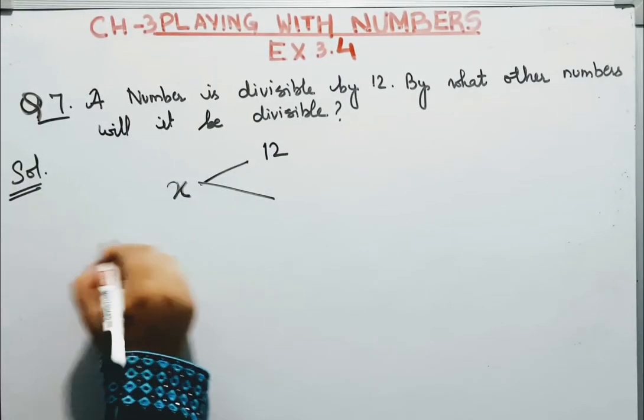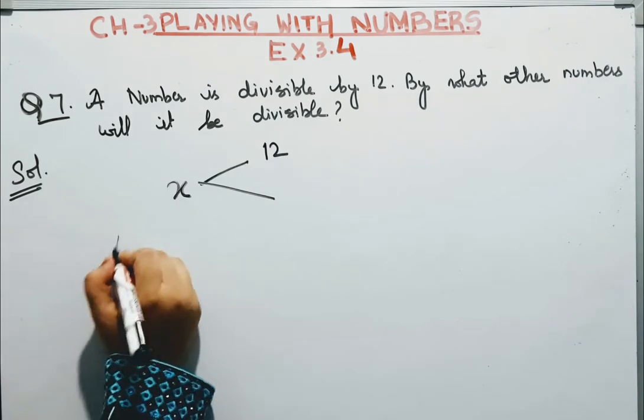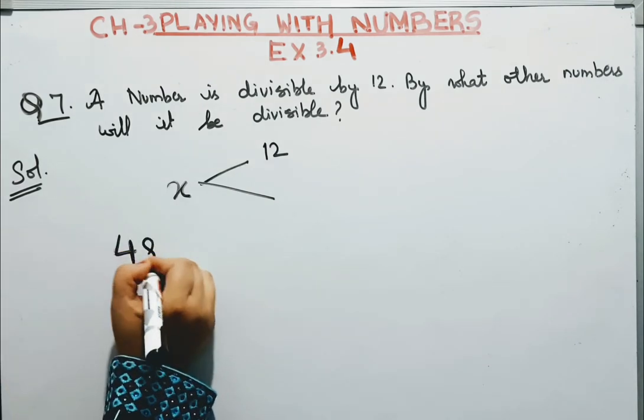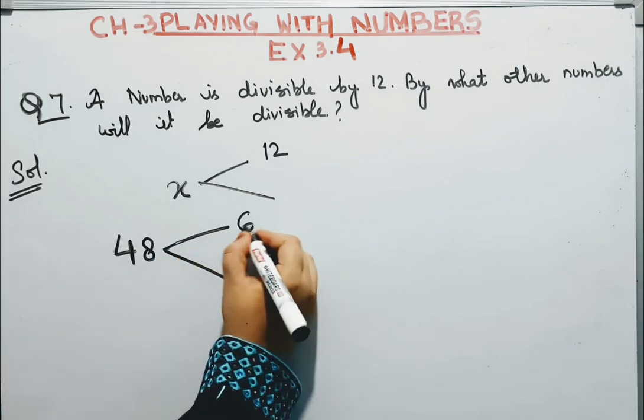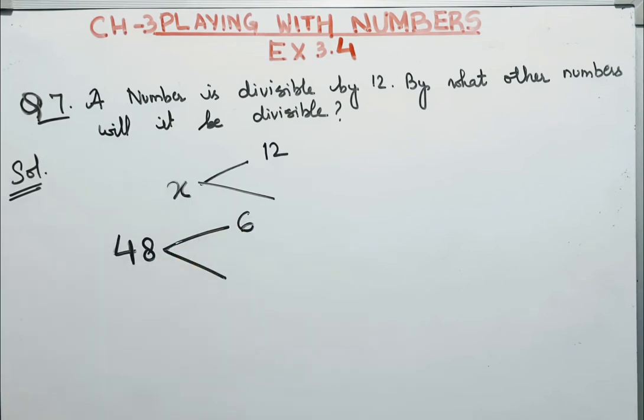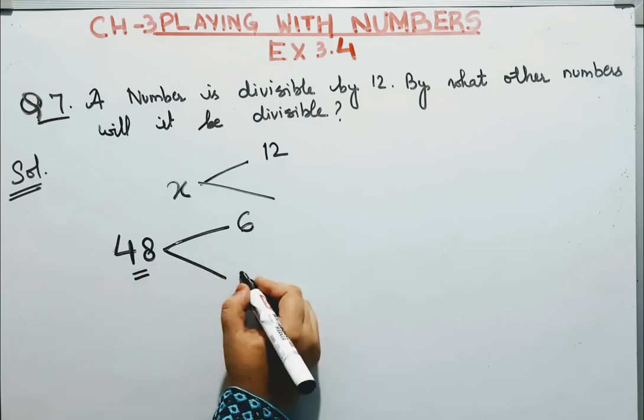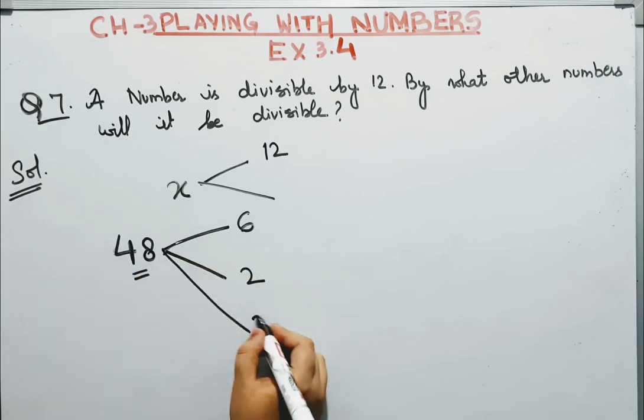Like suppose we take an example. Suppose we take 48. 48 is the number. 48 is divisible by 6. So this number is also divisible by 2 and divisible by 3.